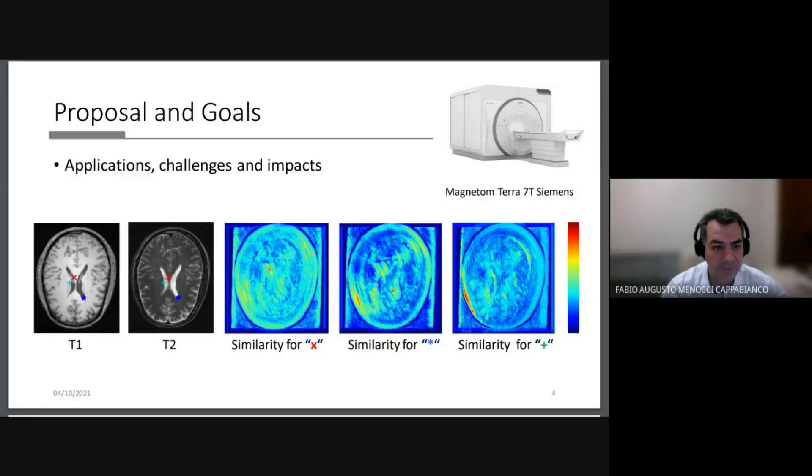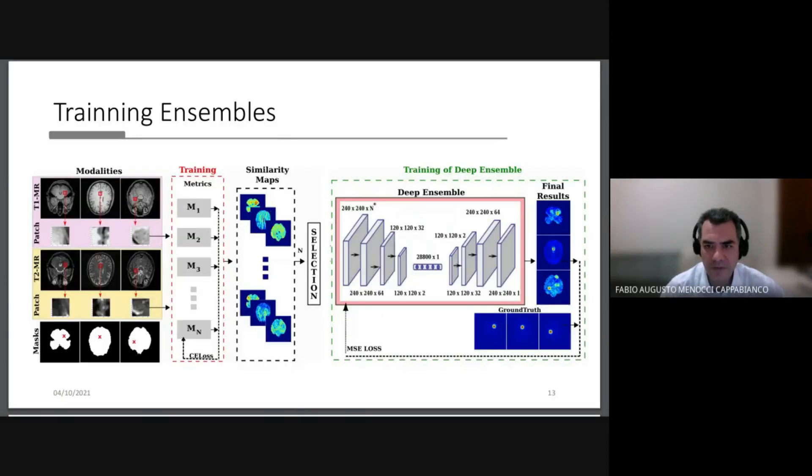This slide shows our main methodological contribution. We propose the Deep Ensemble to compute similarity maps. Starting here from the left, we have, during the training, pairs of patches that are inputs to the network. They may be both from corresponding or non-corresponding regions.